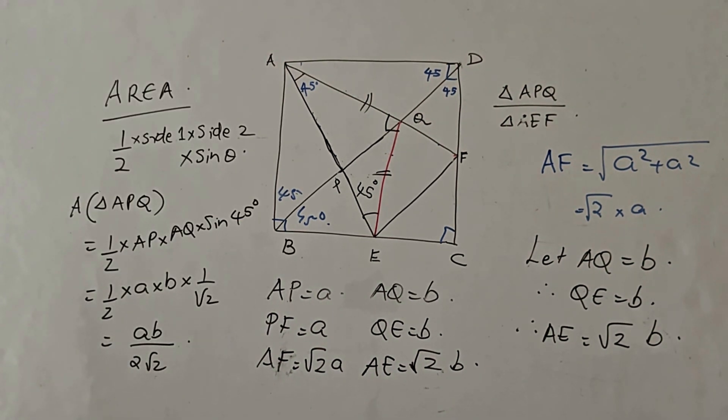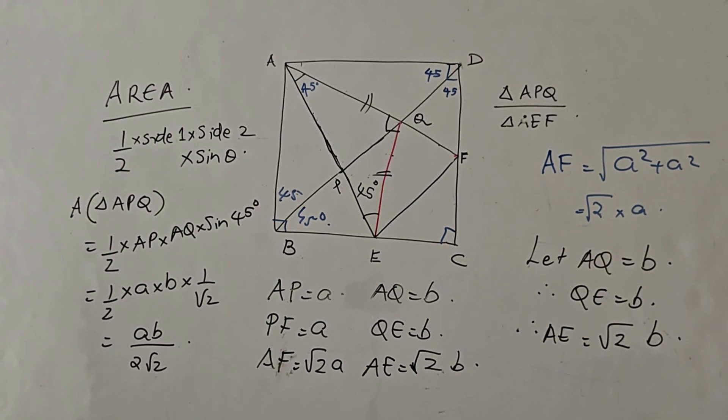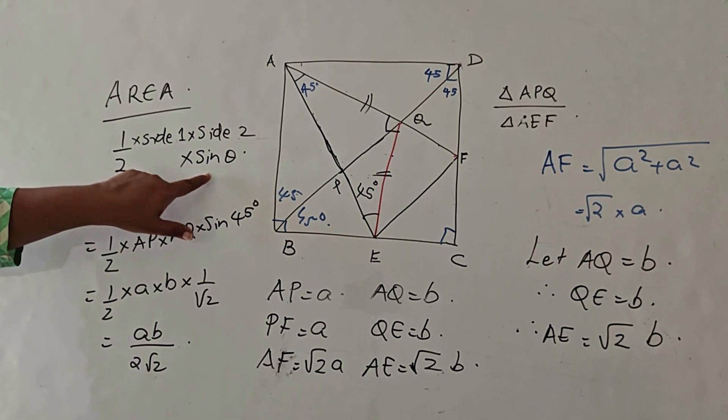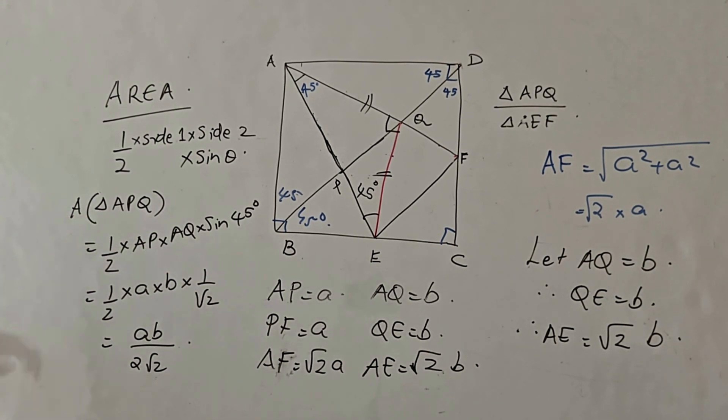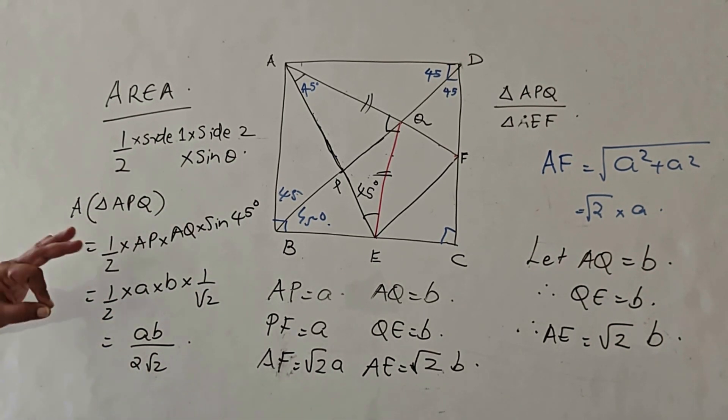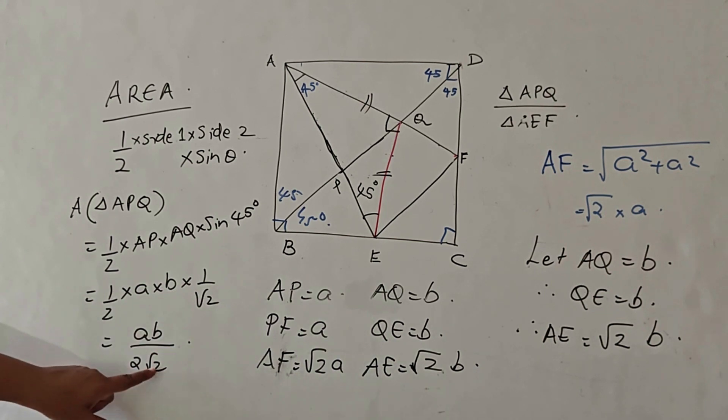For finding out the area of the triangle, I am using the formula half into AB sine theta, or you can say half side 1 into side 2 into sine theta, where theta is the angle included between side 1 and side 2. So the area of the triangle APQ will be half into side AP into side AQ into sine 45. Well, I know the measurement of AP and AQ in terms of A and B, so this is what I am getting.